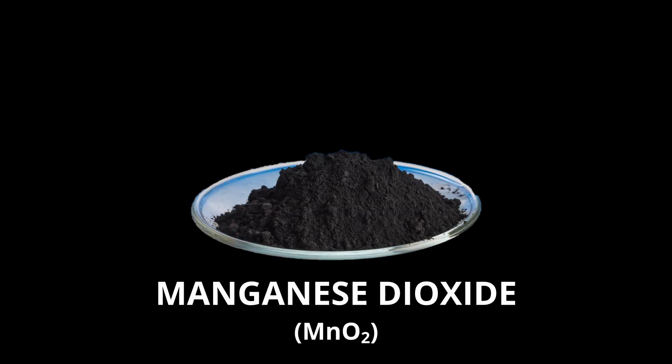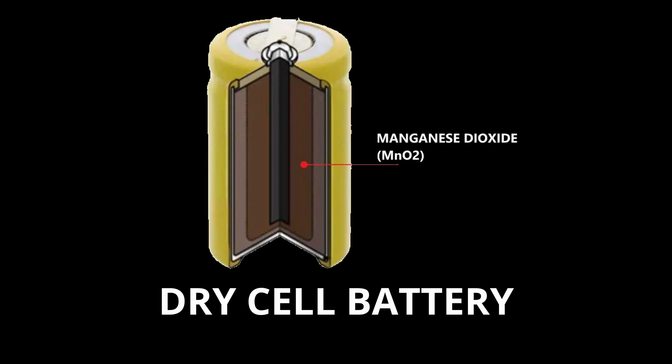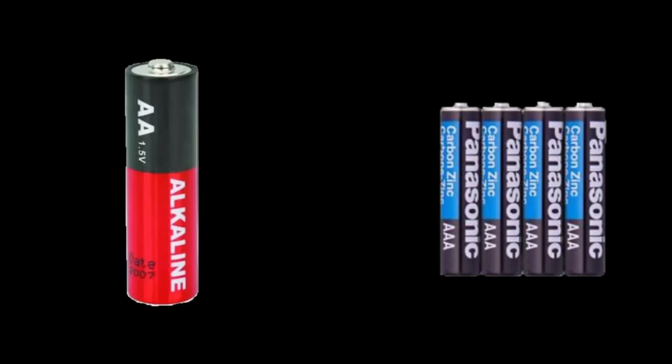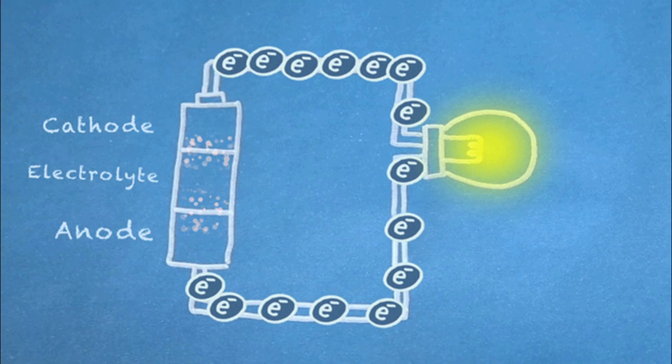In addition, manganese dioxide is widely used in dry cell batteries including alkaline and zinc carbon batteries due to its ability to facilitate electron transfer.